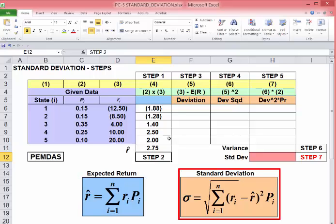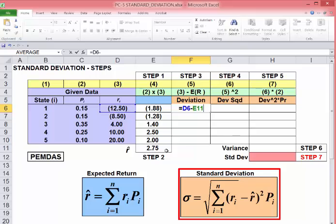Now I'm over here in the standard deviation. The first one is minus 12.50 minus our expected return from step 2, the 2.75, and I want to freeze that. Copy that down.